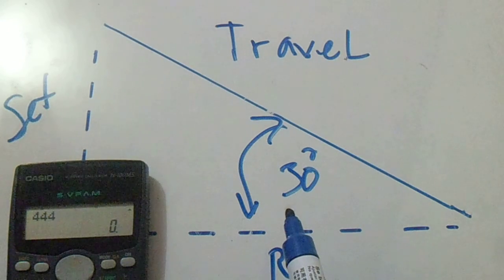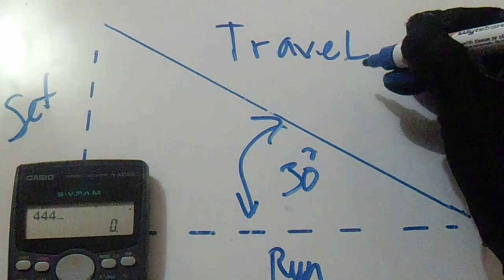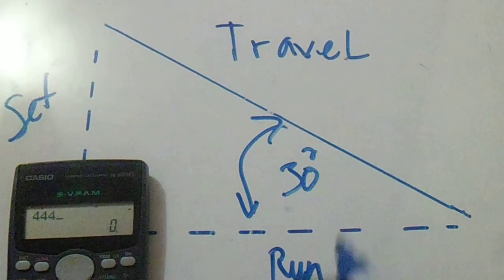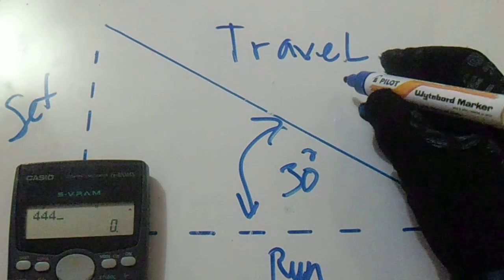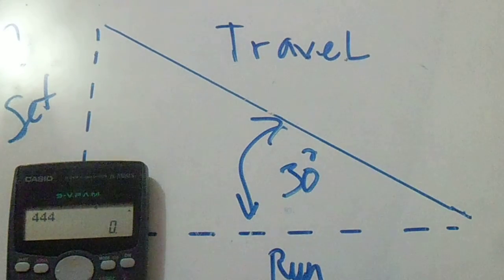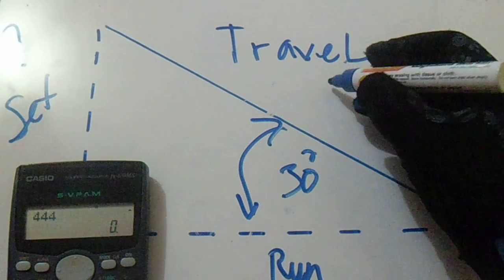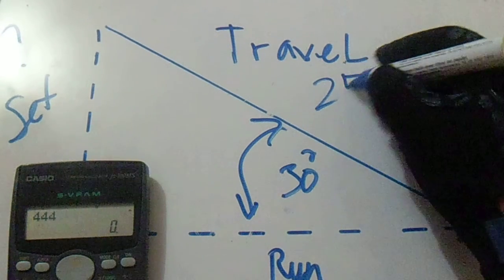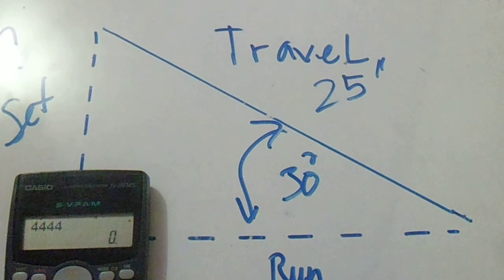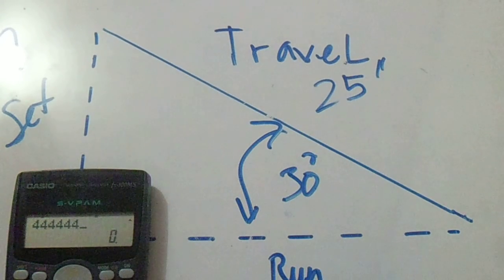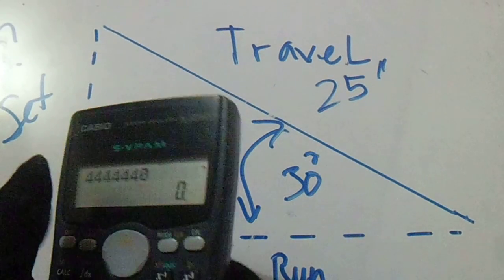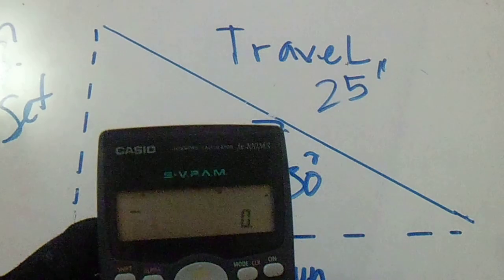...which is travel, or run. But first, we will compute this travel, and we will find the set. Let's say we have 25 here, so this is 25 inches. We will find the set given the degrees and the length of the travel.